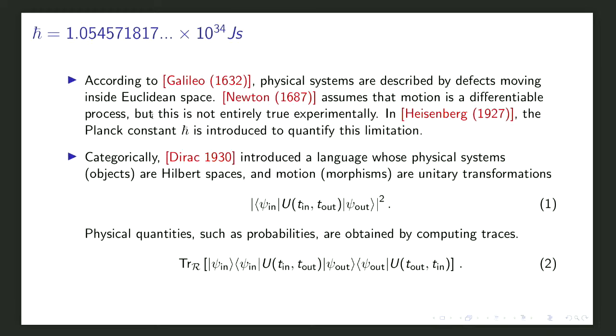These objects — Hilbert spaces — are not just vector spaces but are equipped with a positive definite norm or Hermitian metric. Symmetries must preserve this Hermitian metric, so they must be unitary transformations. The basic thing you want to compute is the probability of a transition between an in-state and an out-state. I like to write this as a trace, which shows that everything in quantum mechanics can eventually be translated into traces.